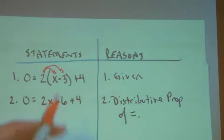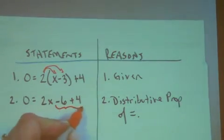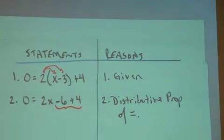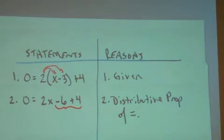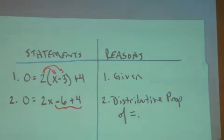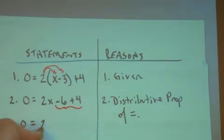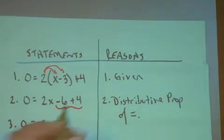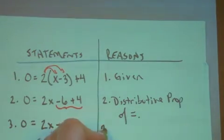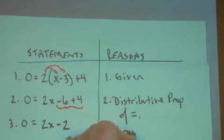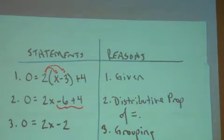In our heads, we need to group those things together. Some teachers are going to call that grouping, some are going to call it collecting like terms — I'm okay with either one. Either way, my statement is 0 is equal to 2x minus 2. Let's go ahead and just call it grouping.